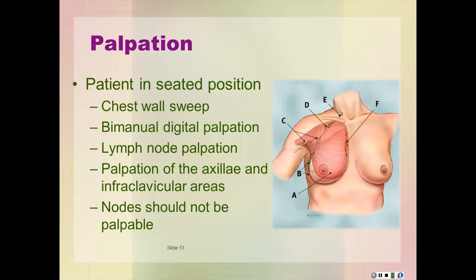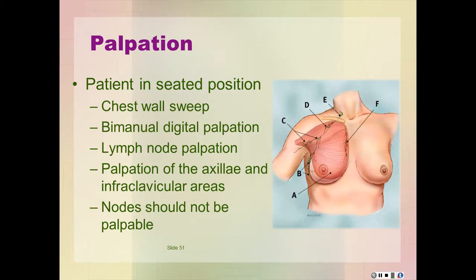With the patient in the seated position, perform a chest wall sweep by placing the palm of your right hand at the patient's right clavicle at the sternum. Sweep downward from the clavicle to the nipple, feeling for superficial lumps. Repeat the sweep until you have covered the entire right chest wall, then repeat the procedure using your left hand for the left chest wall.